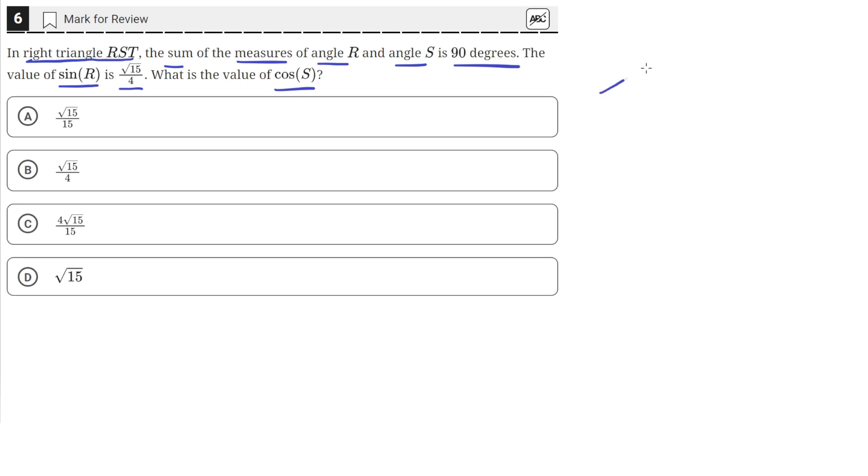Okay, so let's draw out this triangle. We have a right triangle, so 90 degrees here.